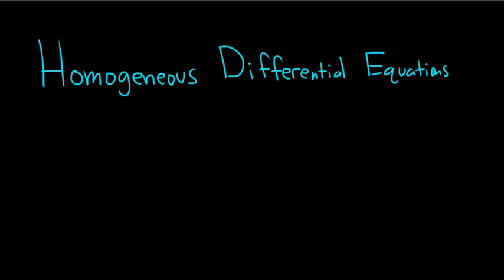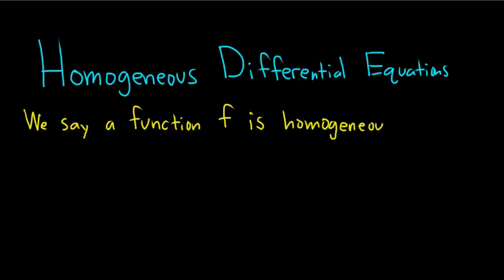So first we need a simple definition. We say a function f, this is a pretty weird definition, we say a function f is homogeneous, so homogeneous of degree alpha.